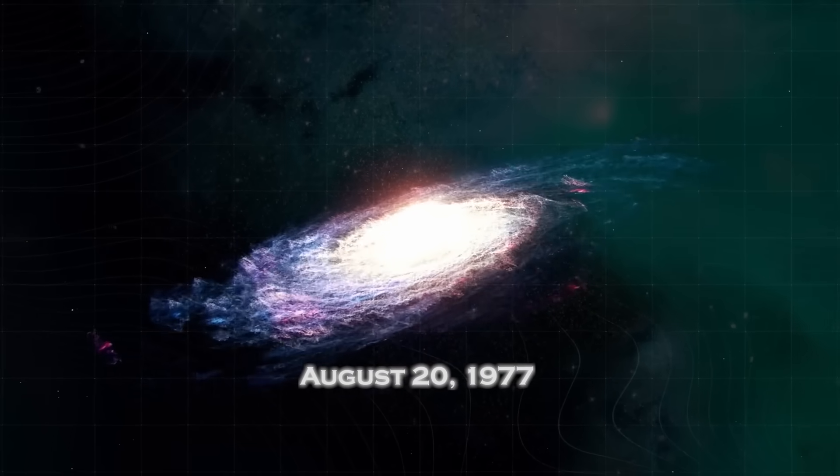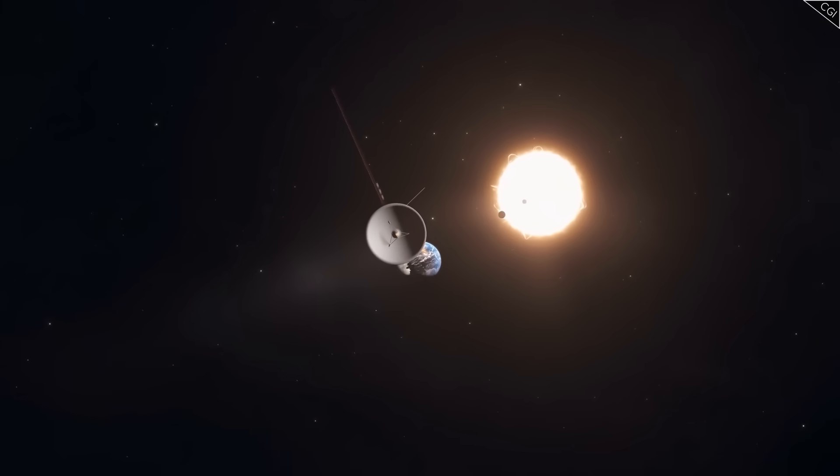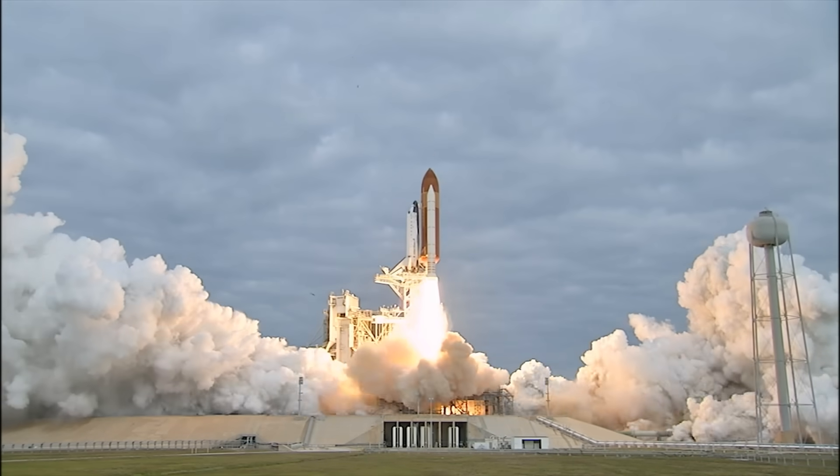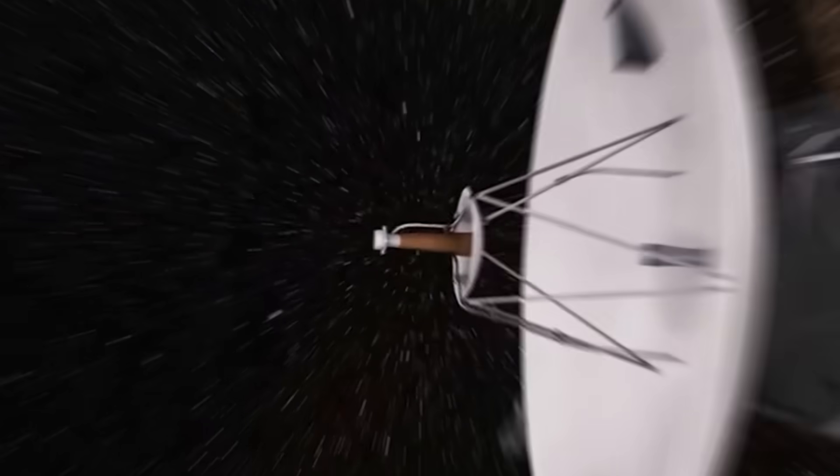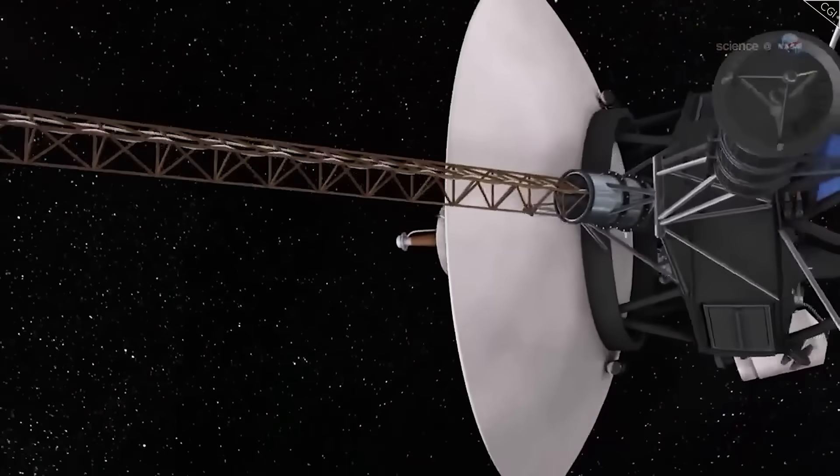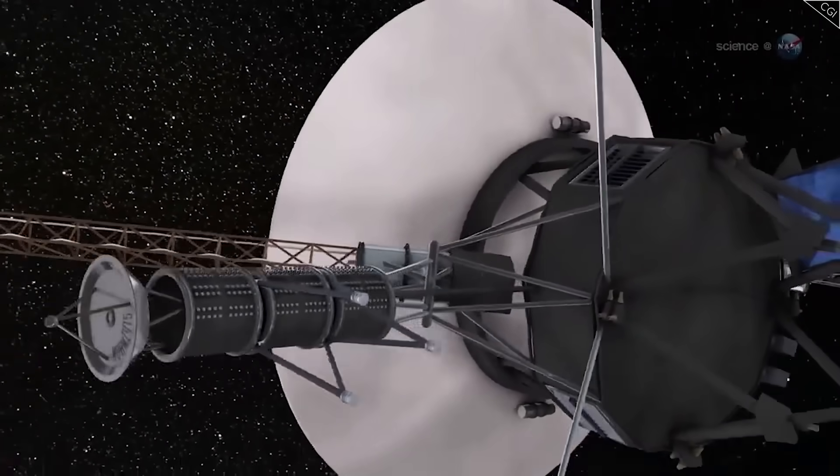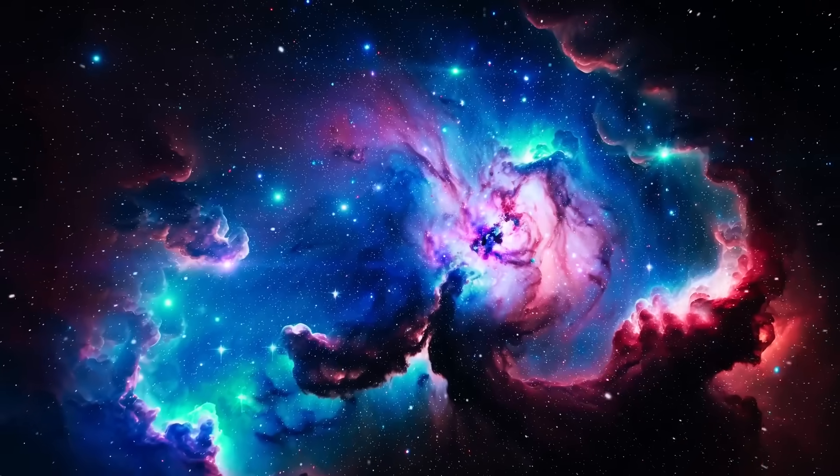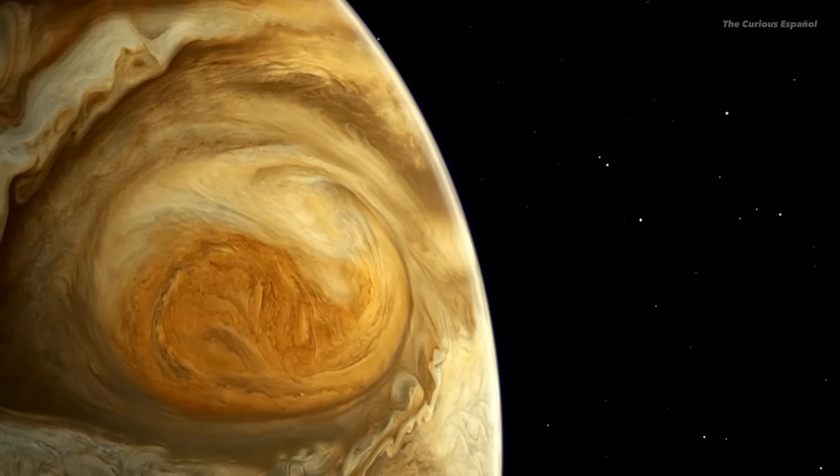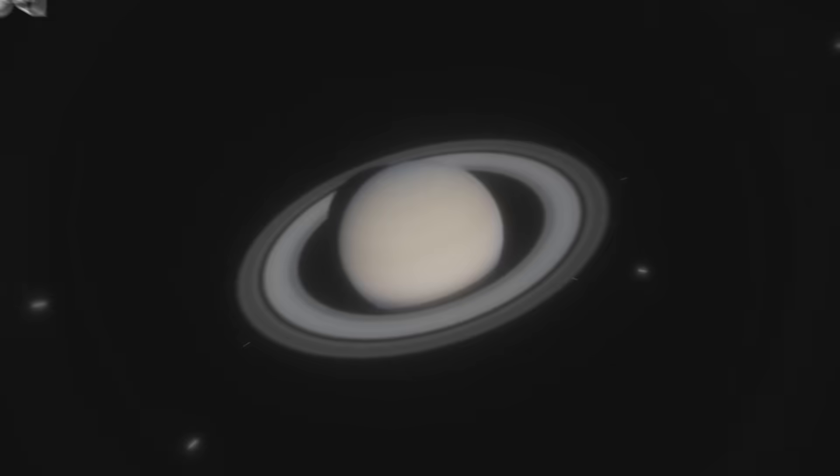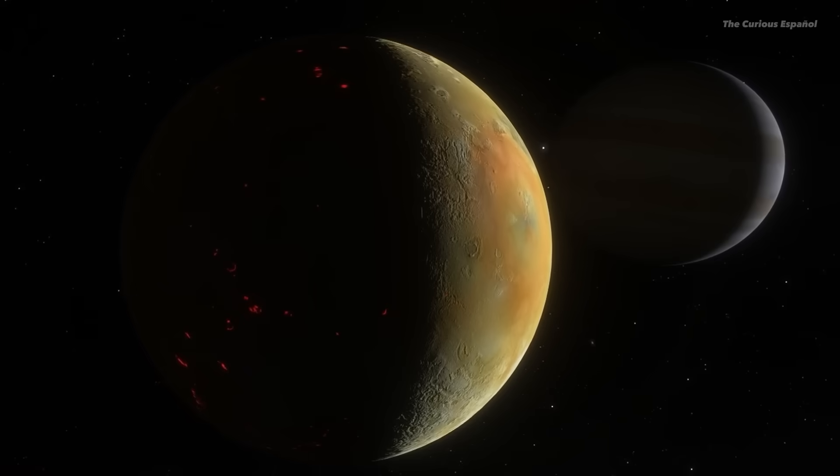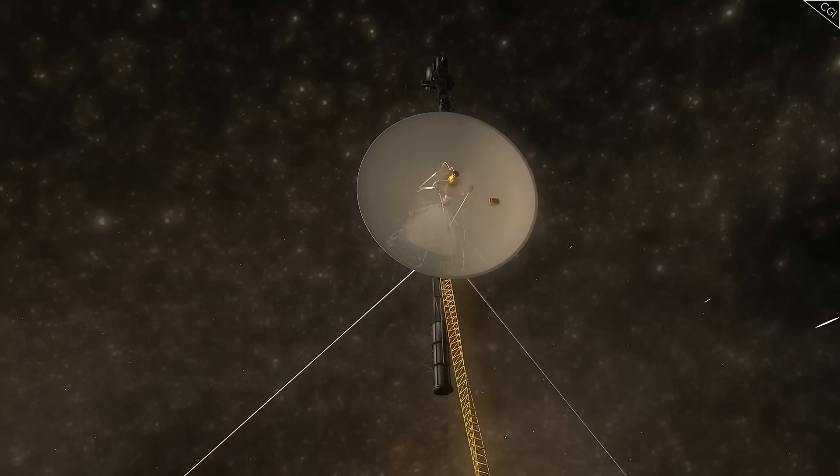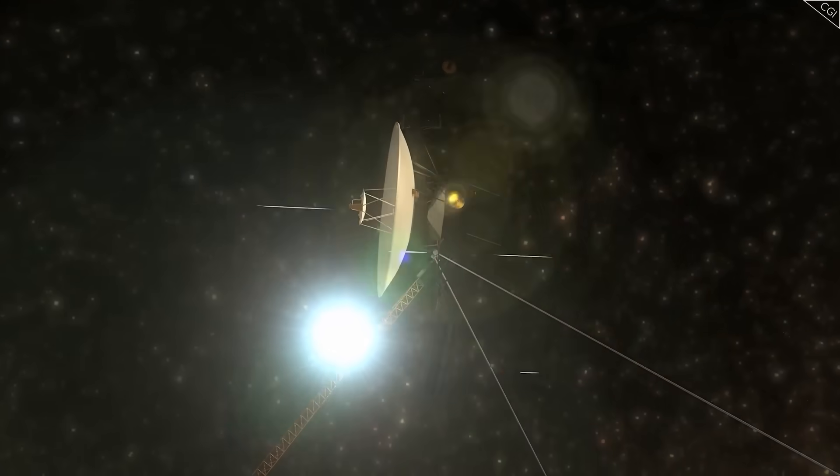It all began in 1977, when Voyager 1 and its twin, Voyager 2, were launched to ride a once-in-a-lifetime alignment of the outer planets. With less memory than a digital watch and power equivalent to a refrigerator light bulb, these probes were never meant to survive half a century. Yet somehow, they did.